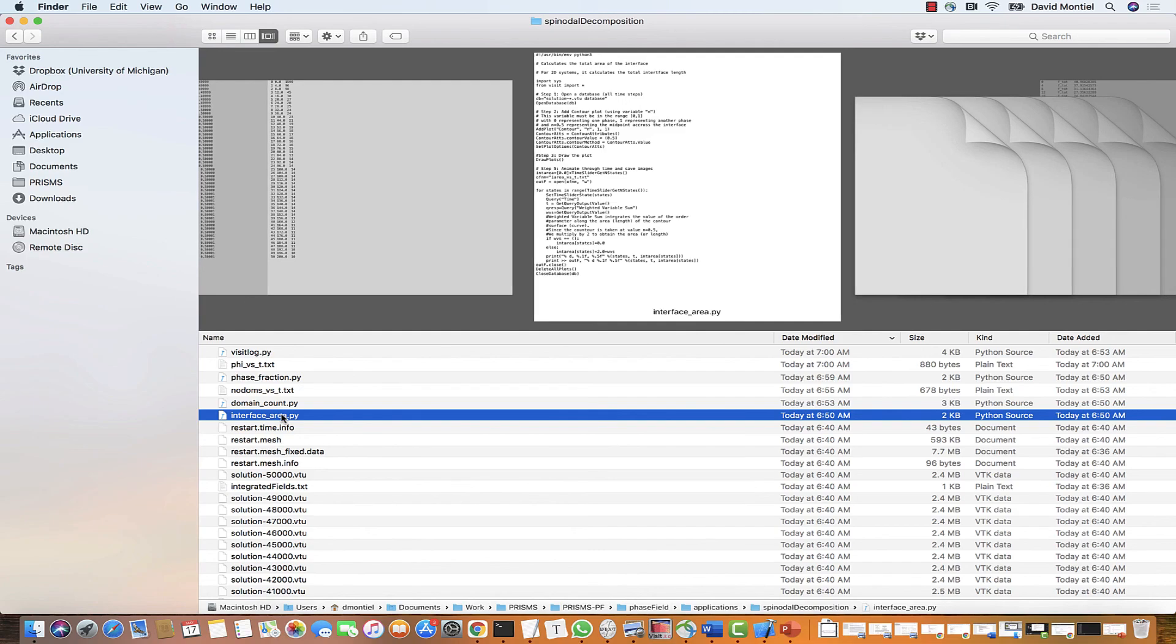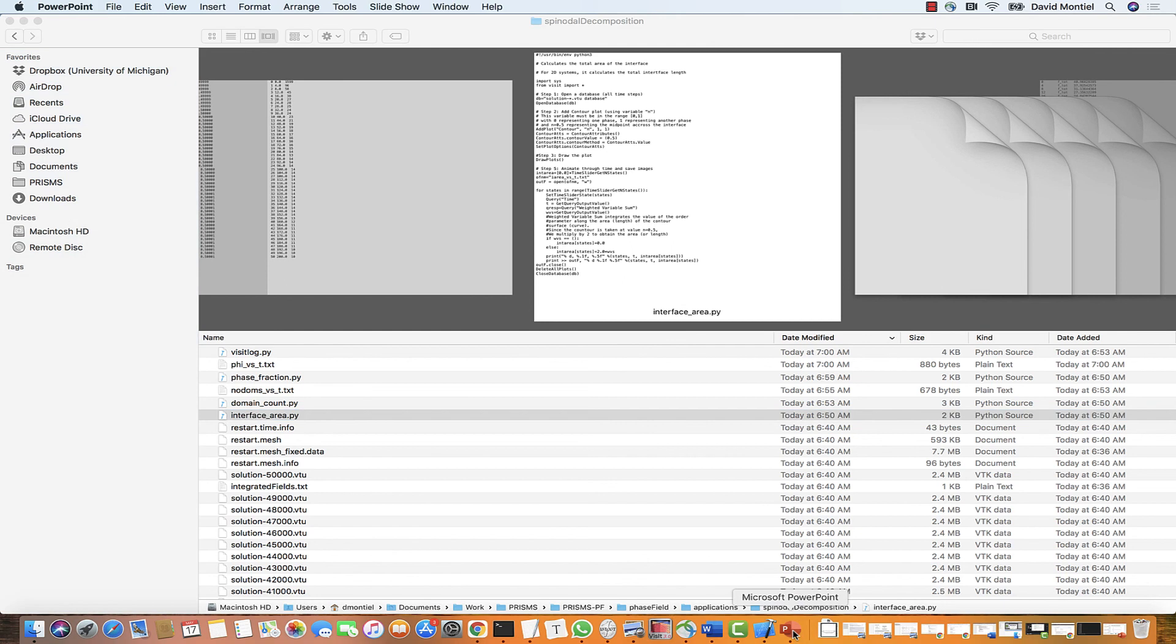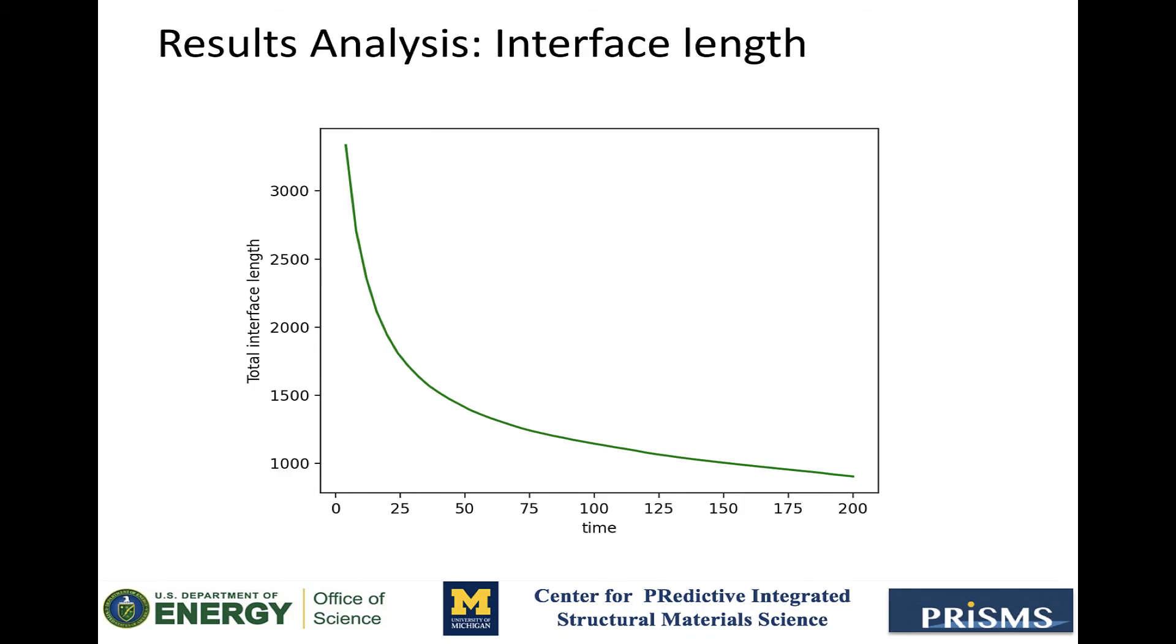Now let's go to the final script, interface area. And as the name indicates, this script calculates the total area of the interface between two phases in a 3D system, or equivalently, the total length of the interface in a 2D system. For this, I'm just going to show you the plot. And again, this is expected, because as domains coarsen, the total interface area between the phases is reduced.